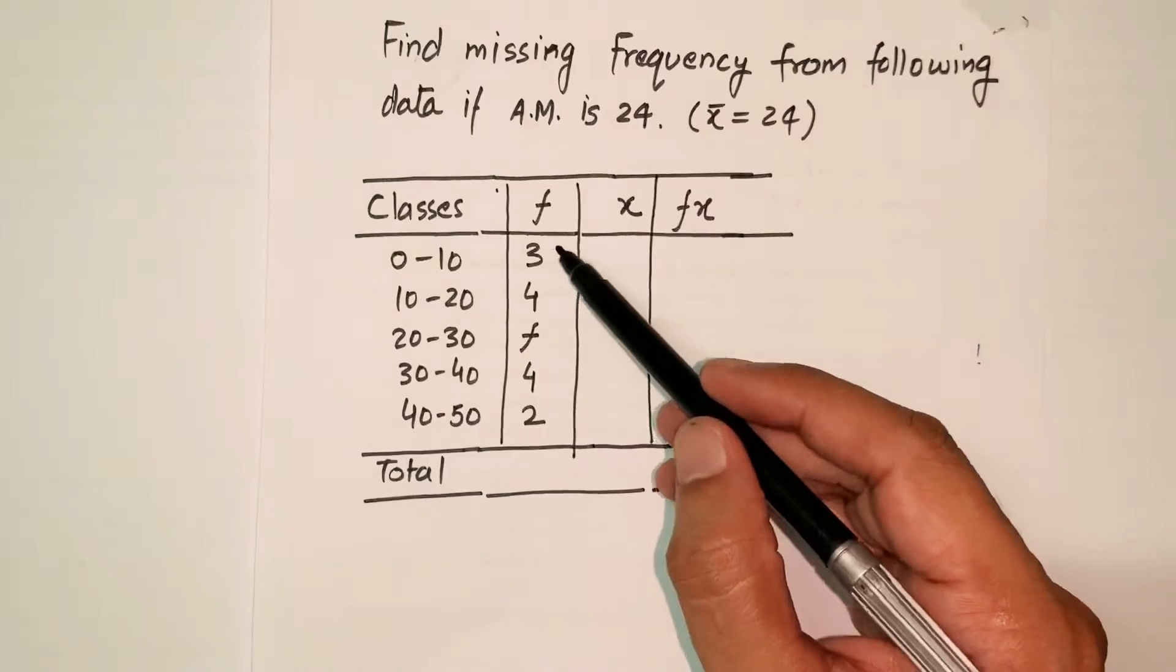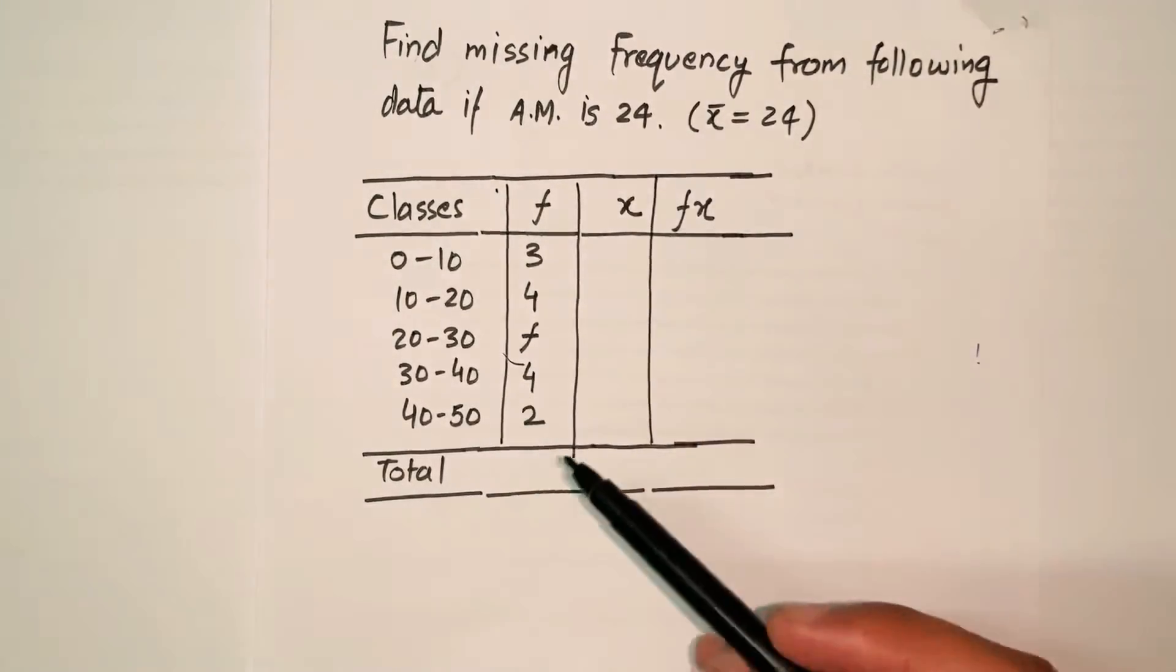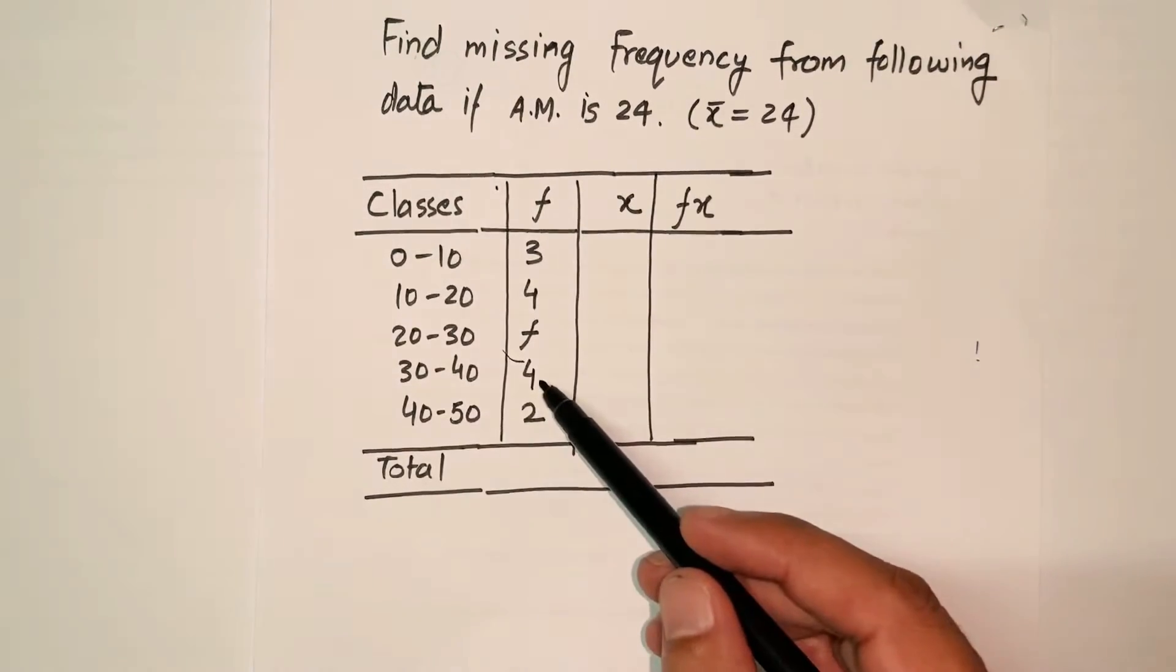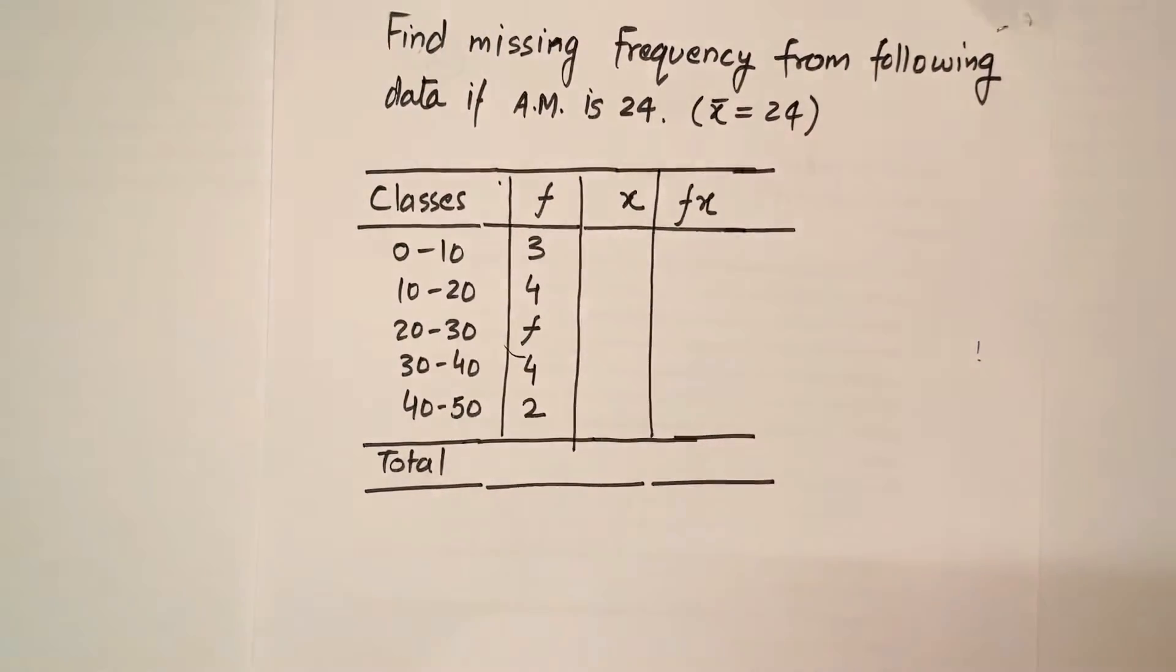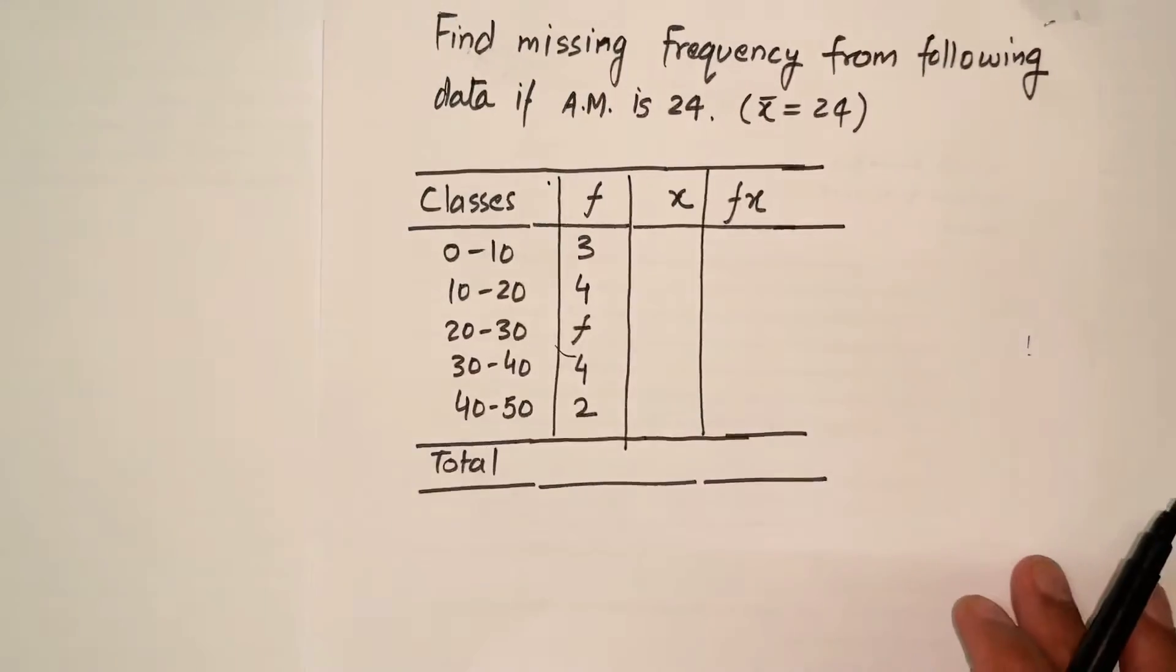The frequency of the first class is 3, second class is 4, the frequency of the third class is missing which has been represented by letter f, the next class has frequency 4, and the next class has frequency 2. It's not a very complicated problem, it's a very easy problem.